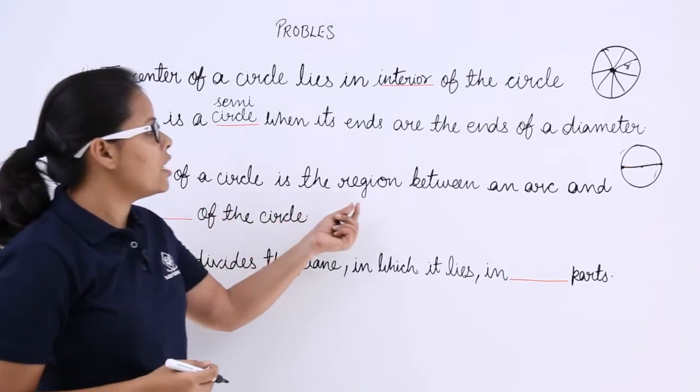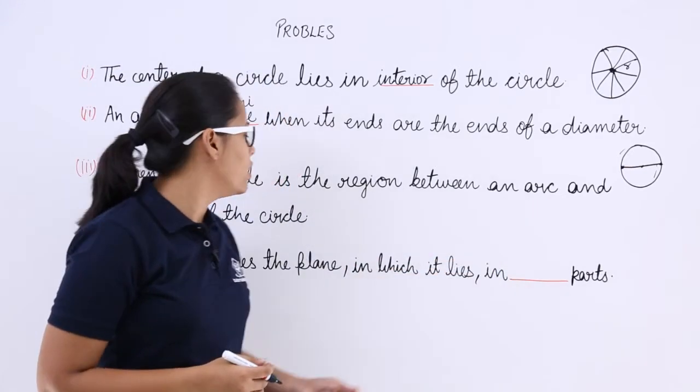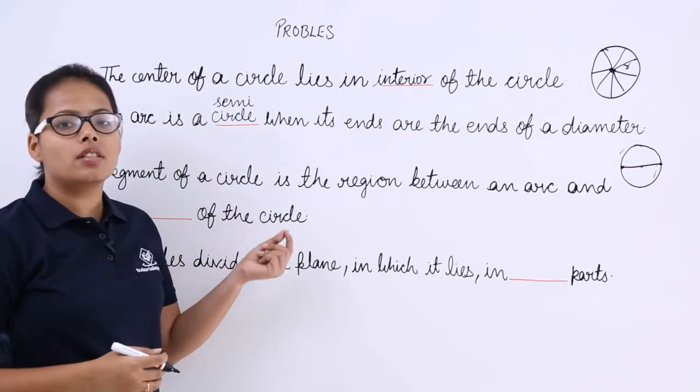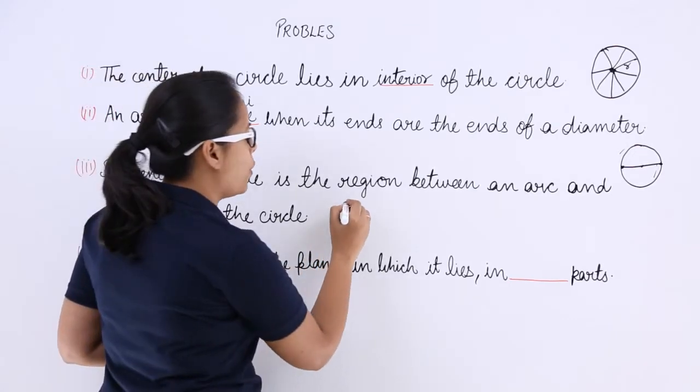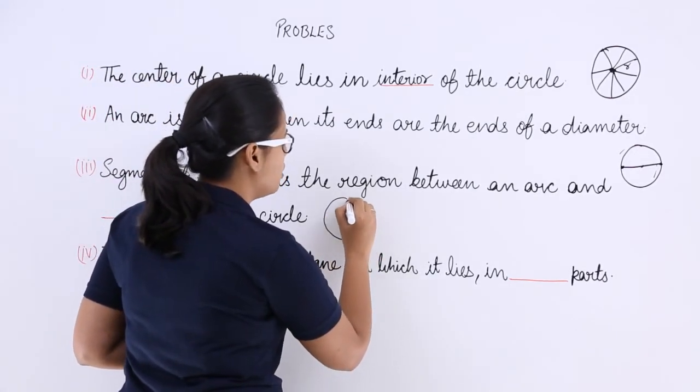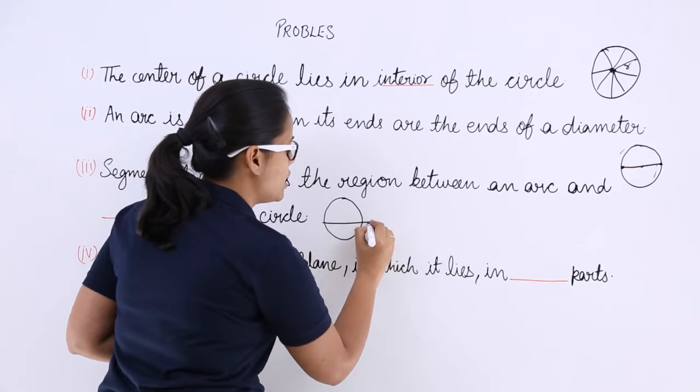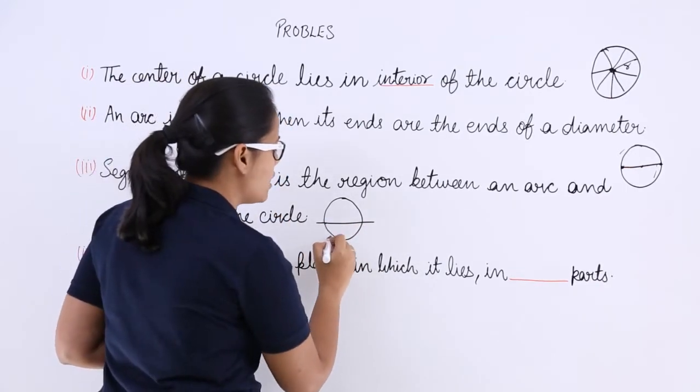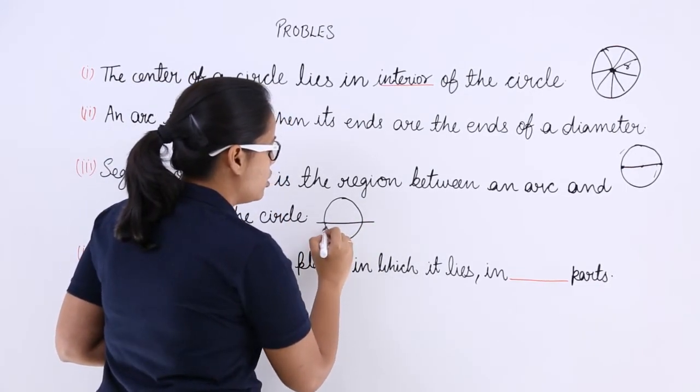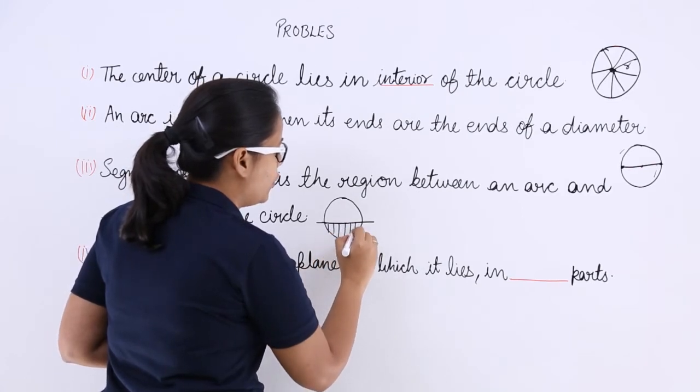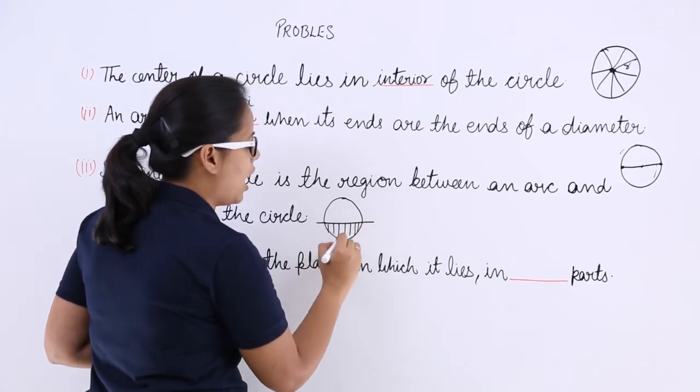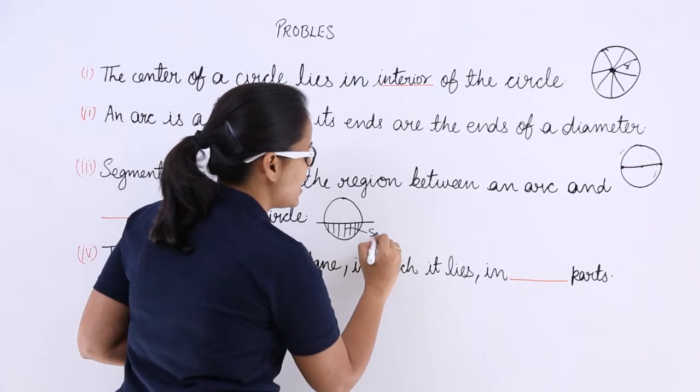Segment of a circle is the region between an arc and blank of the circle. I have told you what is a segment. This is a chord, this is a chord here, and this is an arc. So the area included between the chord and the arc of a circle is known as a segment.